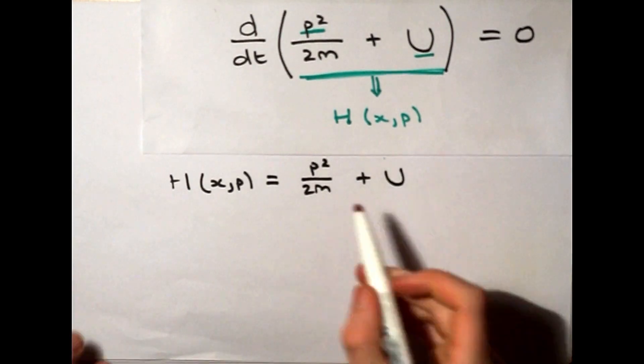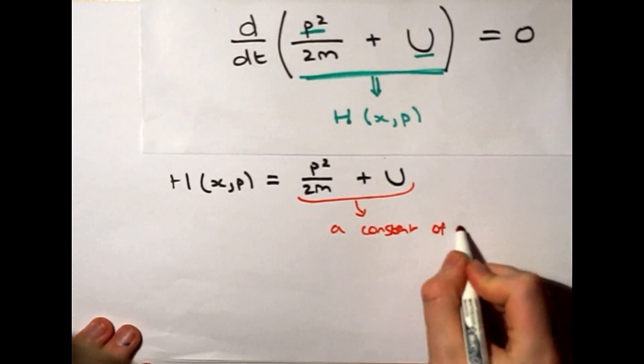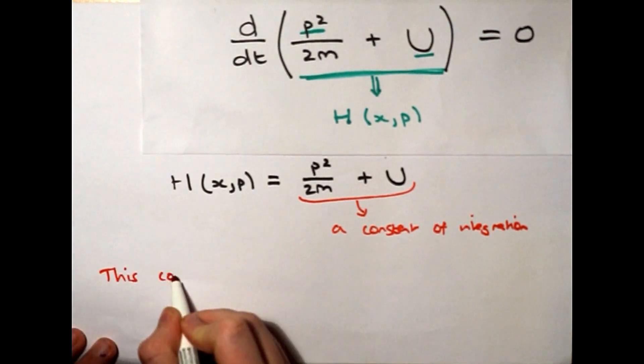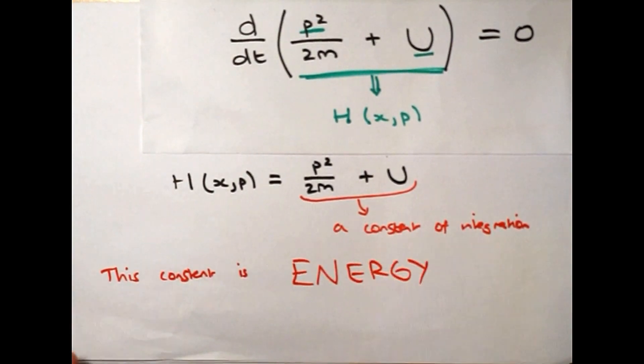And finally, since the rate of change of this function is zero, the Hamiltonian is equal to some constant of integration, and it is this constant of integration that we call energy.